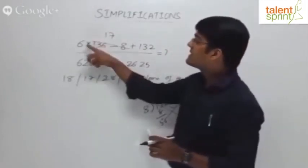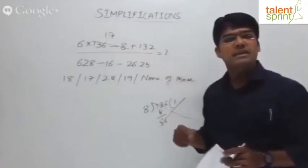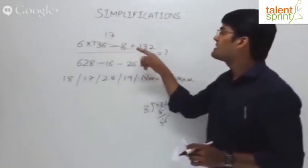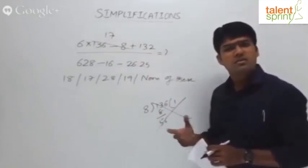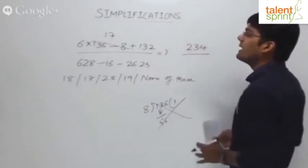Then 6 into 17 plus 132. Multiply next: 6 into 17 is 102. You must remember this. 102 plus 132 is 234. So the numerator here is 234 divided by the denominator.